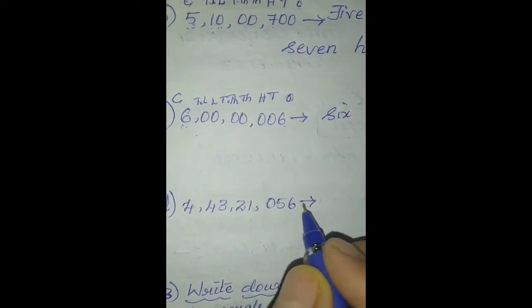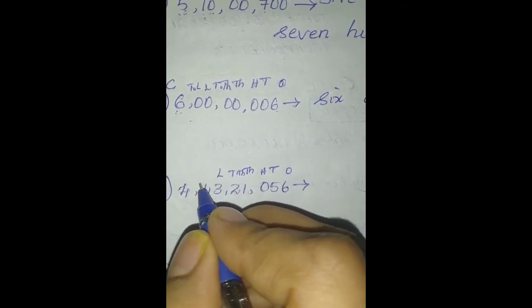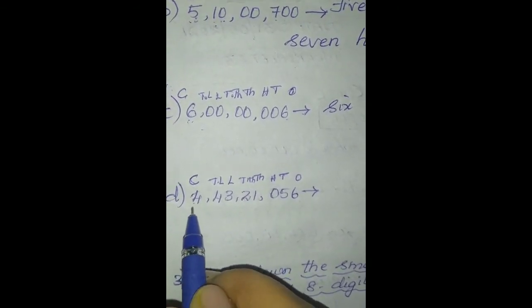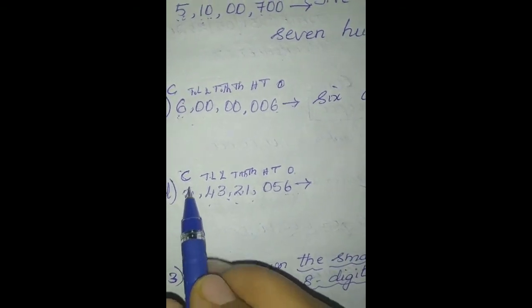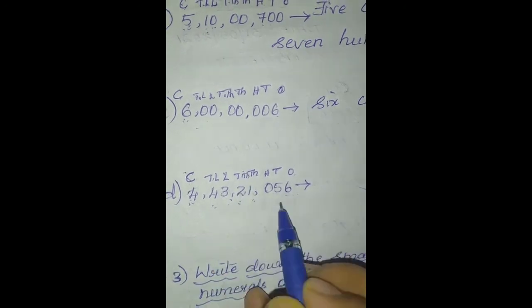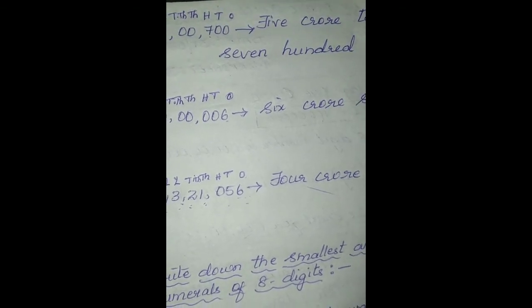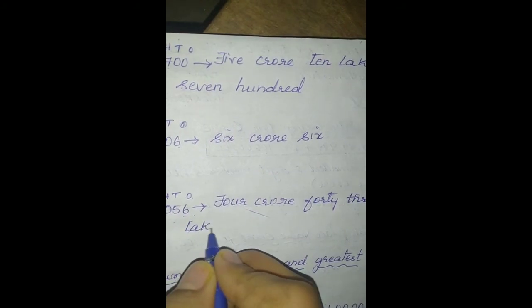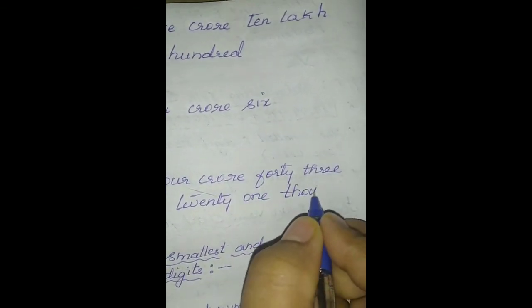Next one. Places: 1s, 10s, 100s, 1000s, 10,000s, lakhs, 10 lakhs, crores. 4 is in the crores place, so start with 4 crore, 43 lakhs, 21,056. Once again, read with me: 4 crore, 43 lakhs, 21,056. There is no 100s place value digit here.